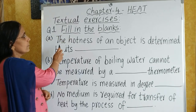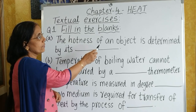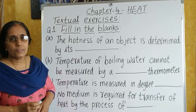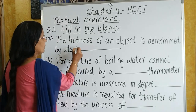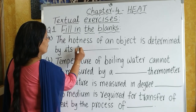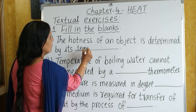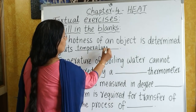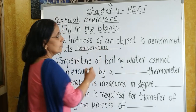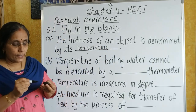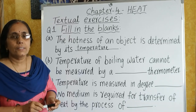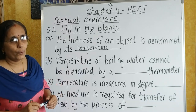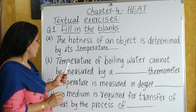The first one is: the hotness of an object is determined by its temperature. Because you have already learnt that temperature is the degree of hotness or coldness of a body.